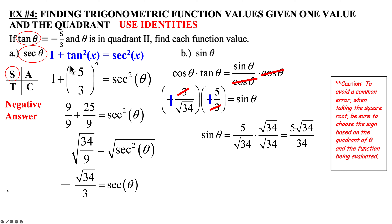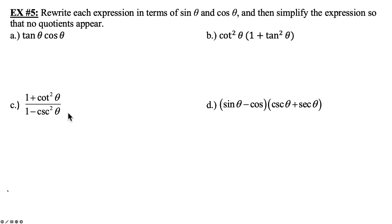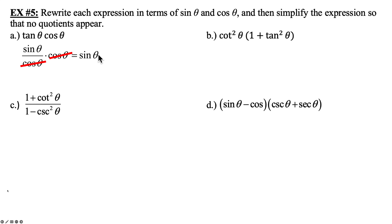Always remember, when using the Pythagorean identities, use All Students Take Calculus to identify the sign of your answer before you get started. Example 5: rewrite each expression in terms of sine theta and cosine theta, then simplify so no quotient appears. For part A: tangent theta times cosine theta — tangent theta is sine theta over cosine theta. The cosine thetas cancel, and we're left with sine theta.